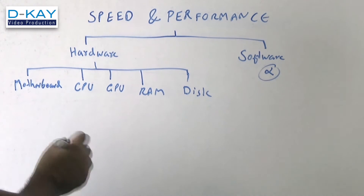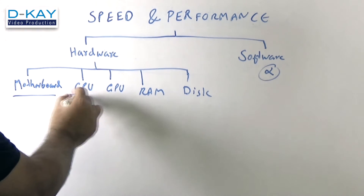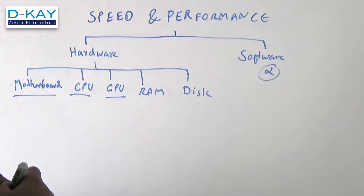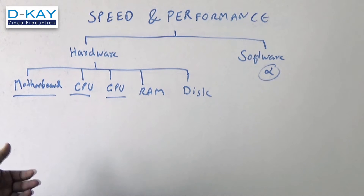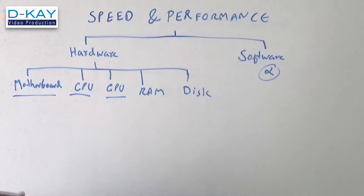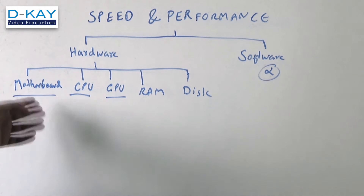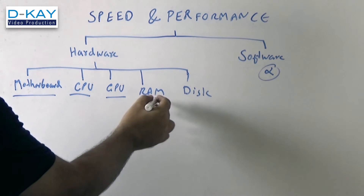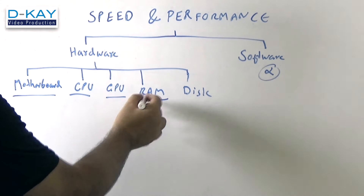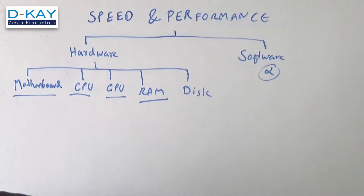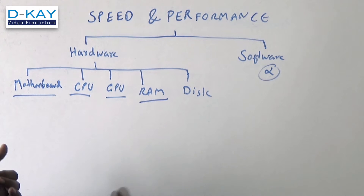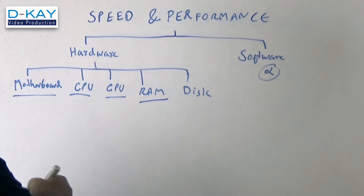In case of the laptop, changing the motherboard, CPU, and GPU is not really a possibility because the laptop comes in a fixed form factor and you don't have many options to make changes. You can increase the RAM — some laptops come with DDR3 RAM, usually bundled with 4 GB of memory, and you can increase that to 8 GB.